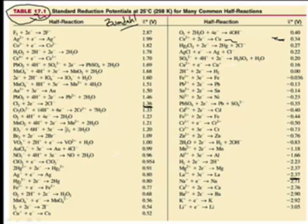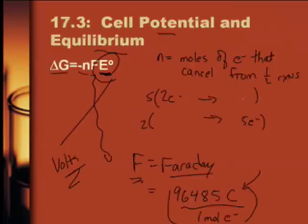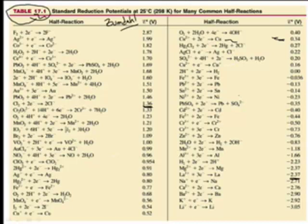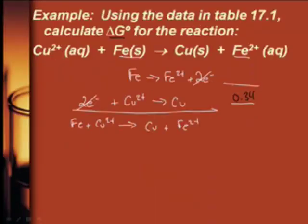0.34 volts for the copper one. The iron to iron 2 — now this is iron 2 to iron, so we're going to have to flip this one because these are all reductions. That's negative 0.44, but we need to flip it, so it's going to be positive 0.44.